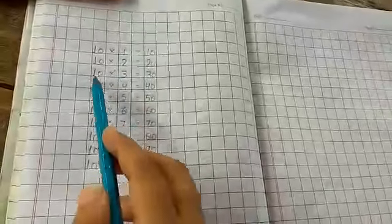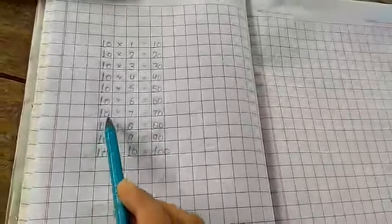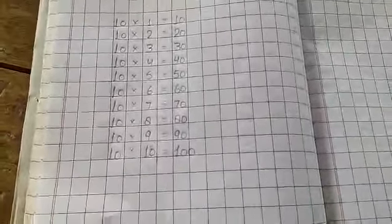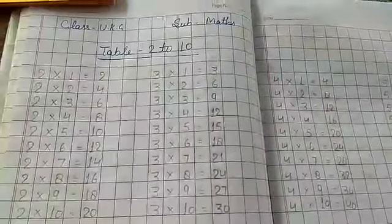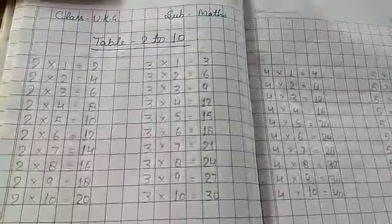10 1's are 10, 10 2's are 20, 10 3's are 30, 10 4's are 40, 10 5's are 50, 10 6's are 60, 10 7's are 70, 10 8's are 80, 10 9's are 90, 10 10's are 100. All UKG class children, 2 to 10 table read okay, 3 times 2 to 10 table read okay.